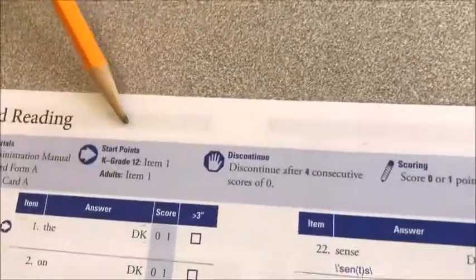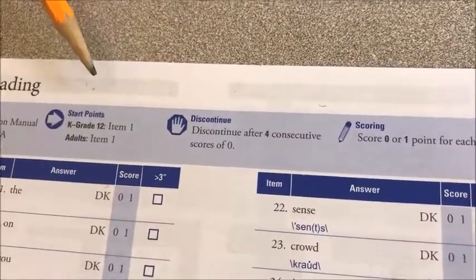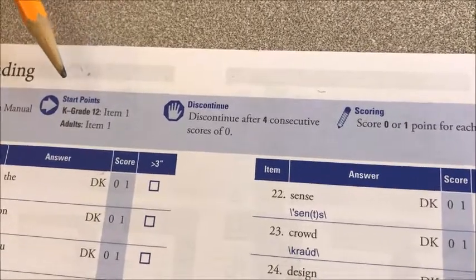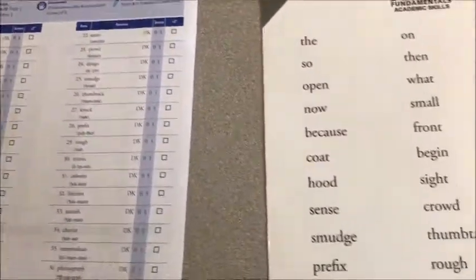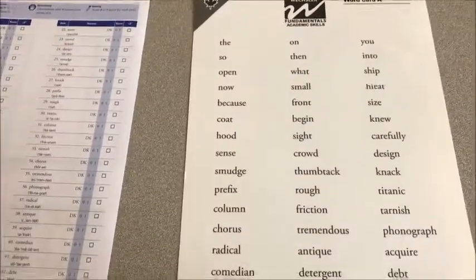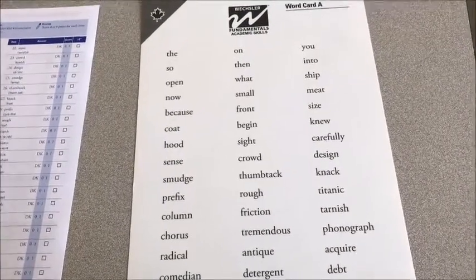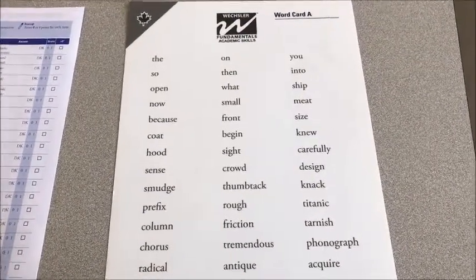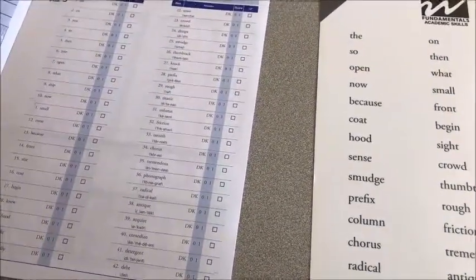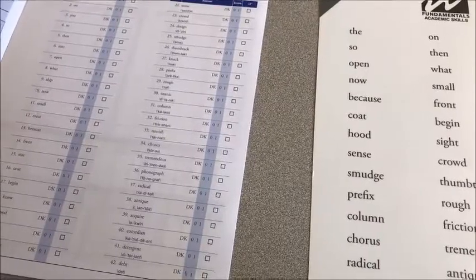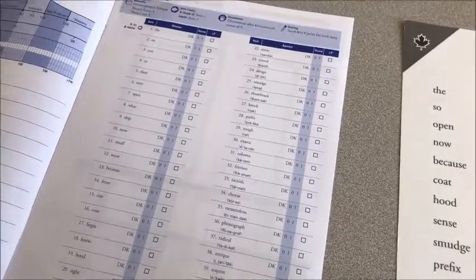The instructions for doing this are right on the top of the form. If the student reads four consecutive words wrong, you're going to discontinue the test. You'll also explain to them that if they make a mistake, they can fix it up. If they don't know a word, they can just guess and keep going until they get four wrong in a row, and then you can stop the test at that point.